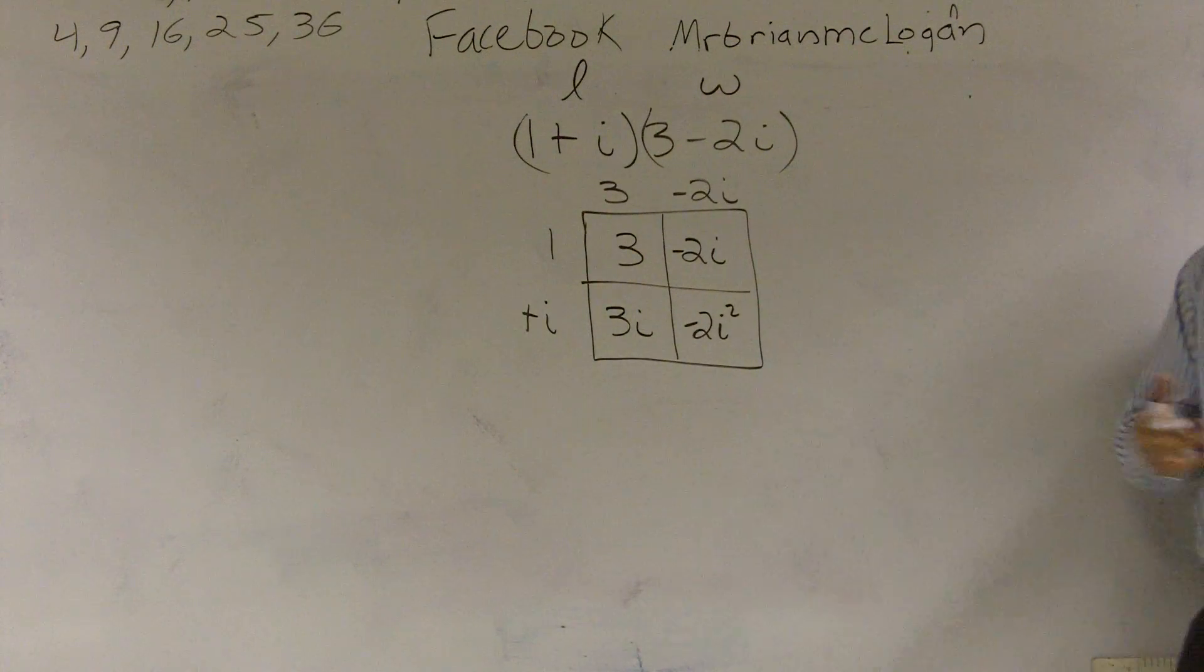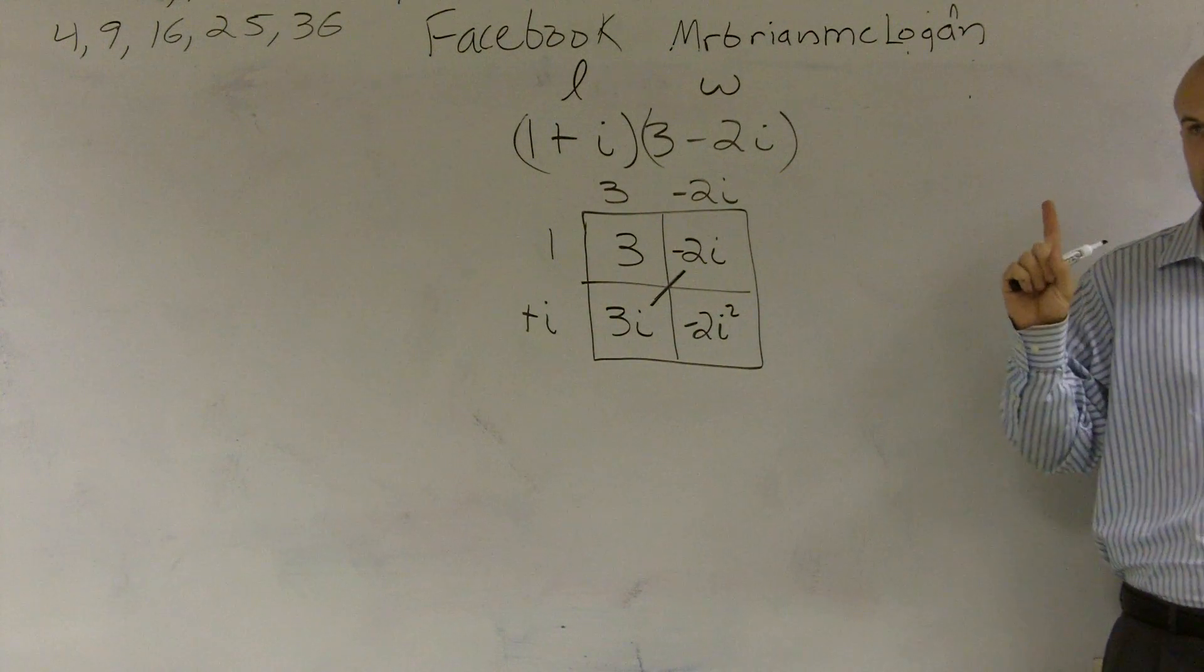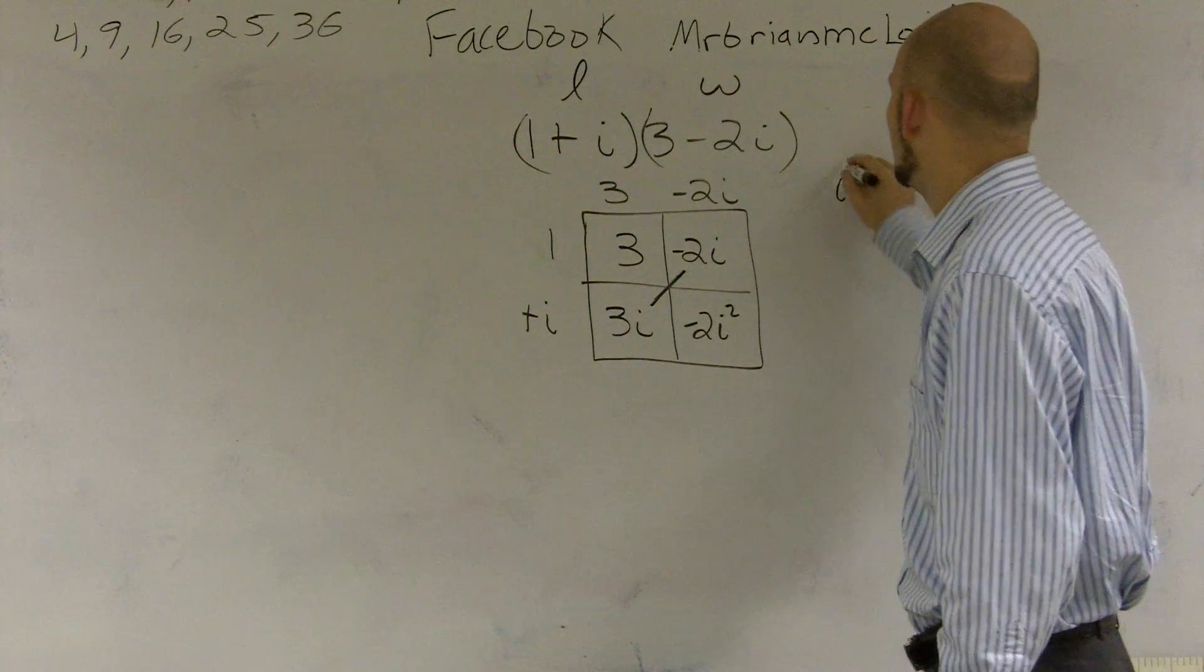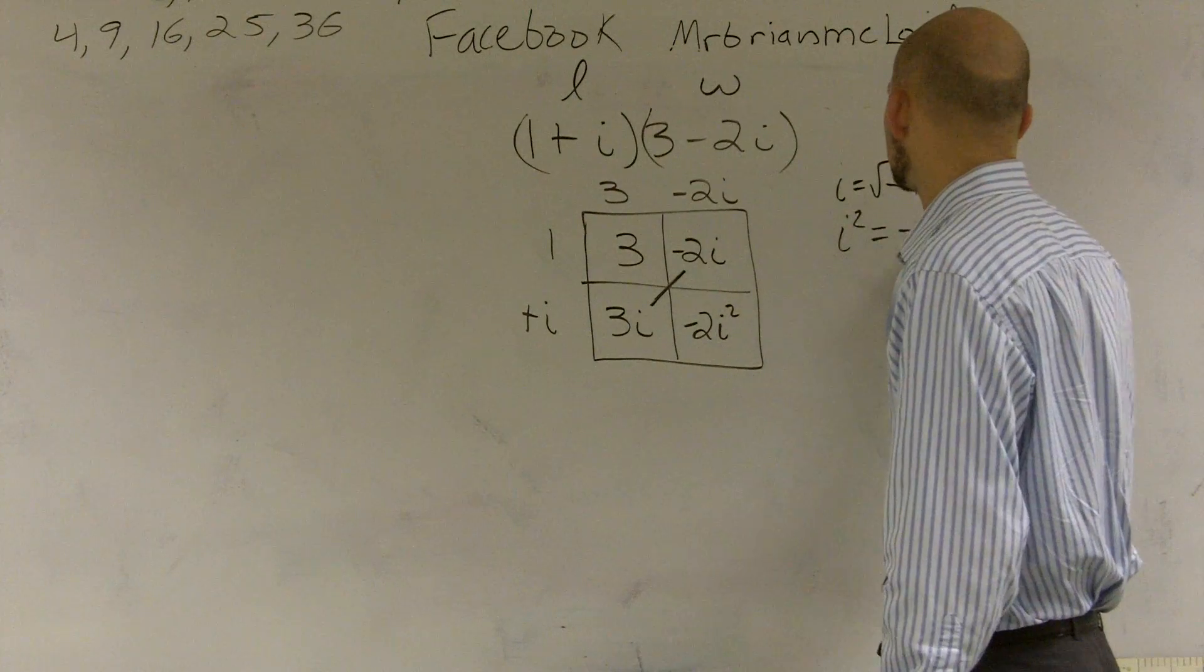Now what we notice is these two are like terms. So we can combine them to give us 1i. And then i squared, if you remember, if i gives us the square root of negative 1, i squared is going to give us negative 1.